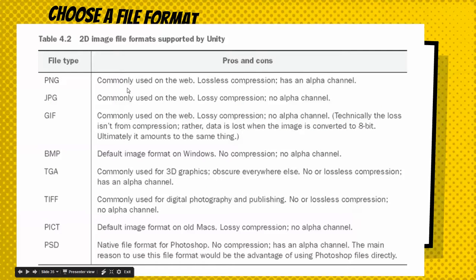Here are the different file formats. A PNG is good — this is what we use. It's compressed, so it's smaller, but it doesn't lose quality, and it does have an alpha channel. A JPEG loses quality and has no alpha channel, so you can't have transparency. A GIF is something we use too. A TIFF has no compression — the quality is high but the file is really big. You can also use a Photoshop file if you want to edit things in Photoshop and put them in directly, but for us we're going to use a PNG.